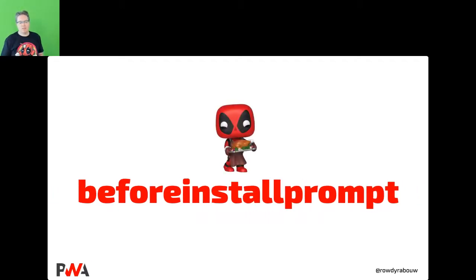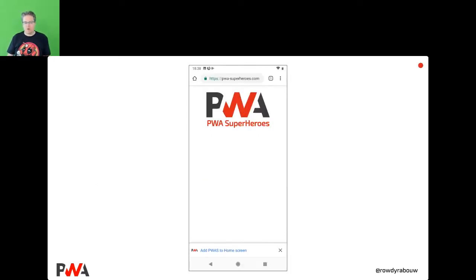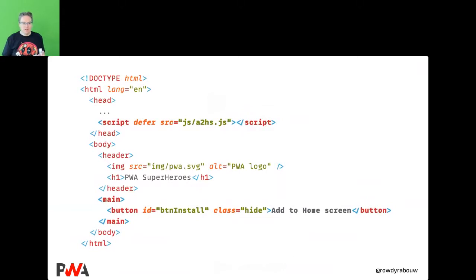That's all manual. Maybe you don't want to tell users step by step how to do it — you want a user-friendly way. We can do that with the 'beforeinstallprompt' event. Unfortunately this only works on Chrome, Edge, Opera, and Samsung Internet — not yet in Firefox and Safari. Chrome will show its own install suggestion at the bottom, but in my opinion it can feel intrusive and might scare people off.